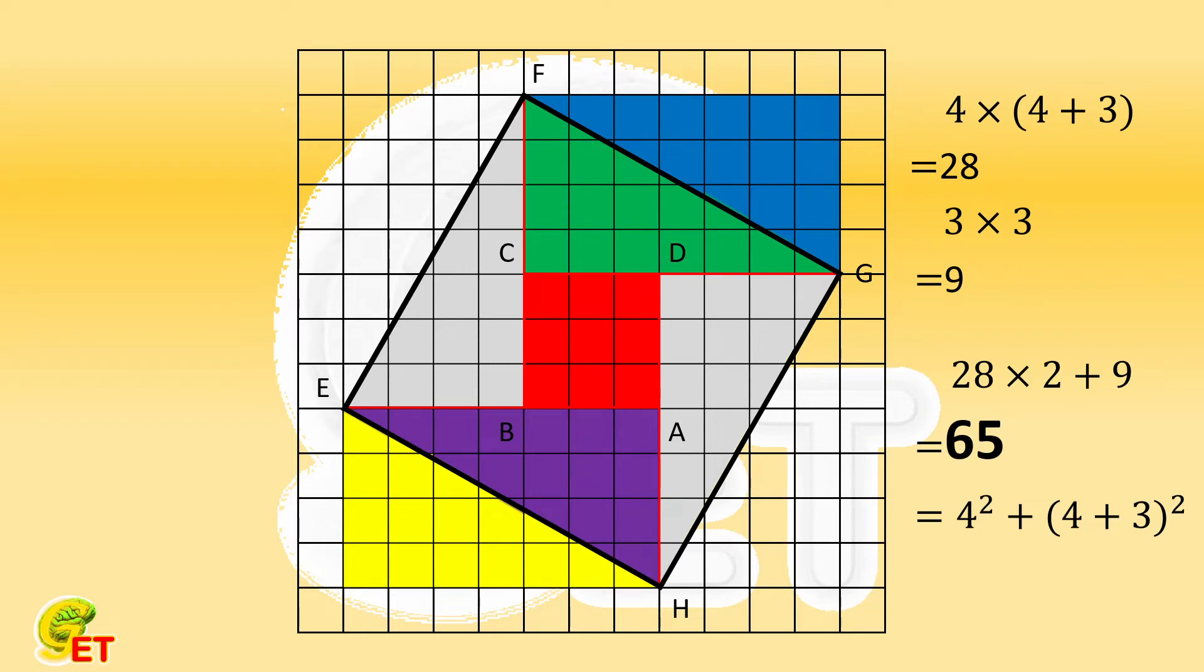In the following, let's discuss the Pythagorean theorem in a more general form. We still consider such one of the four triangles. We name its two legs as A and B. The hypotenuse is C. So the side length of the small square is the difference between A and B.